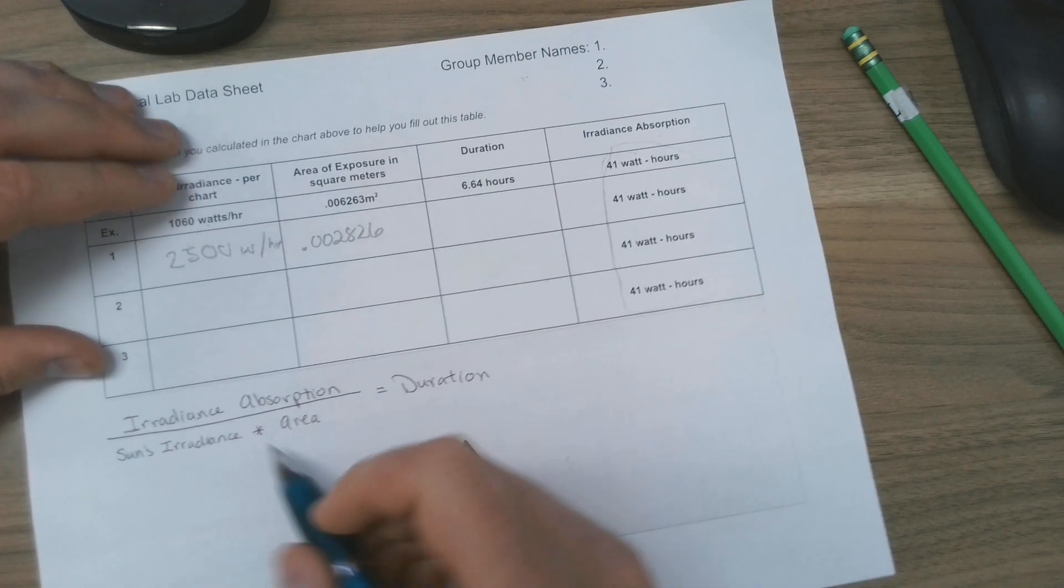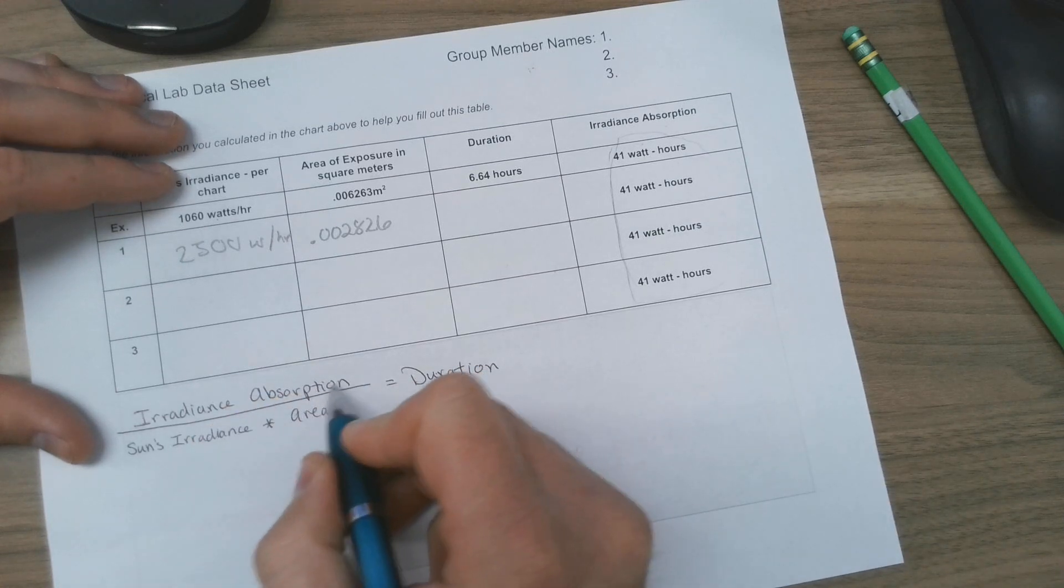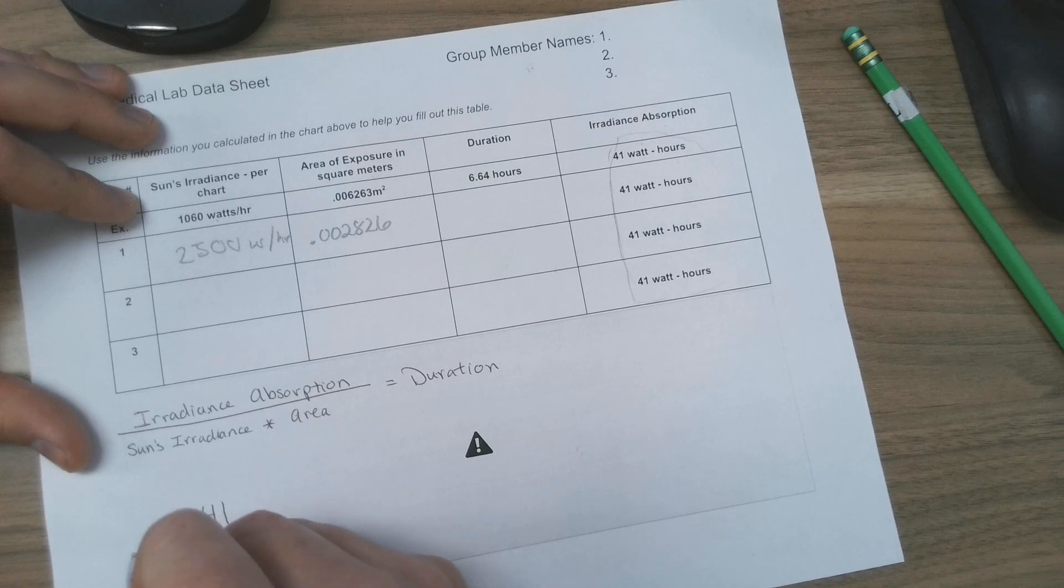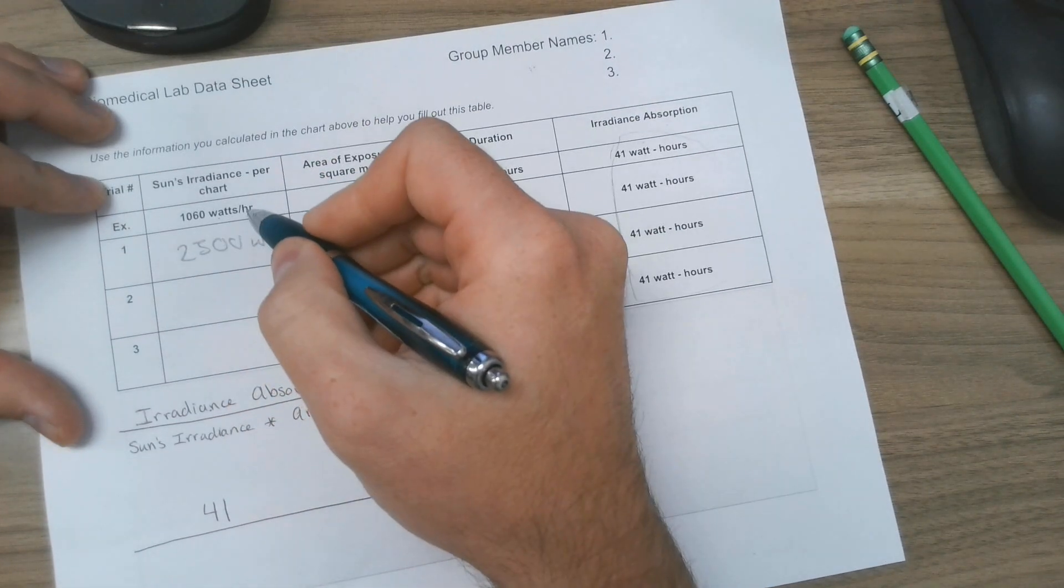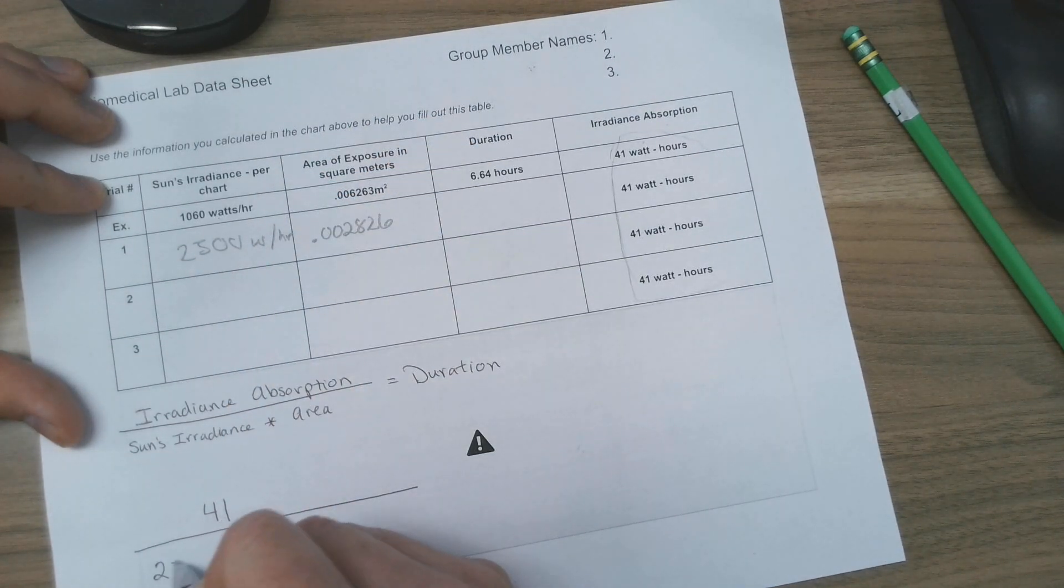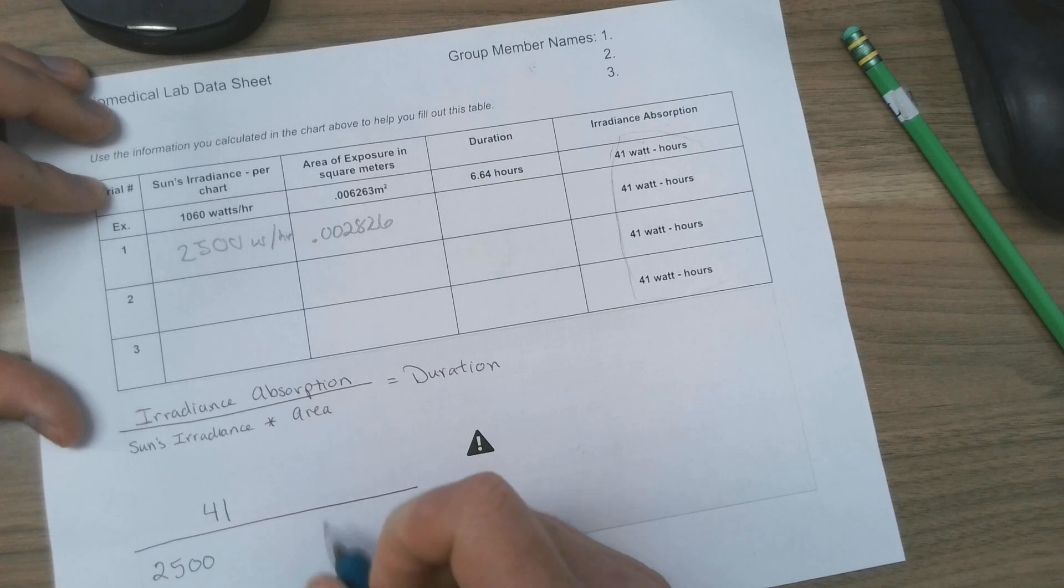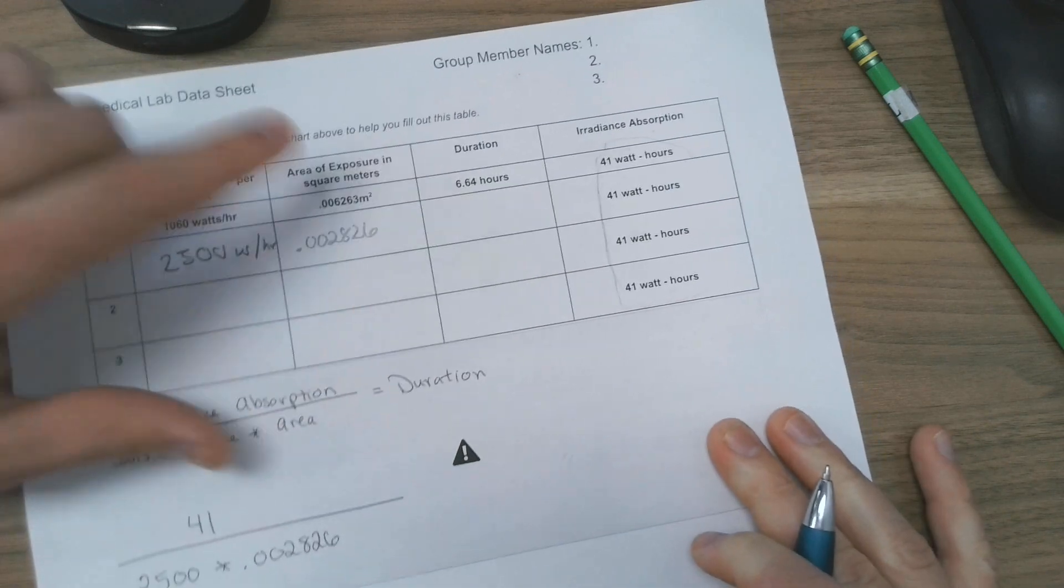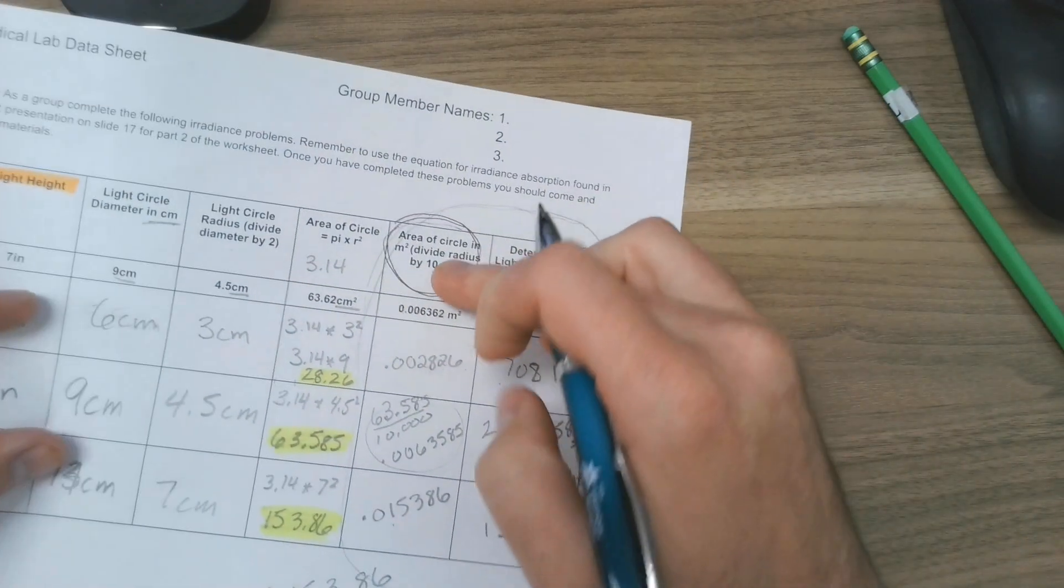So as I just said, remember that the irradiance absorption is always going to be 41. So we have 41 in this case, and my sun's irradiance is right here. My sun's irradiance in this case is 2500 and the area is right here. So multiply by 0.002826, which again this is found right here.